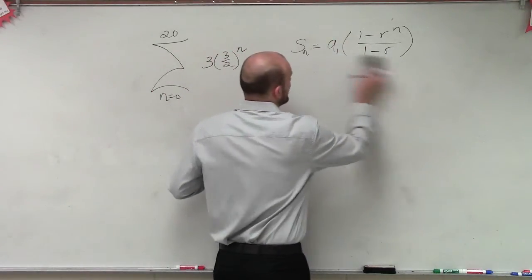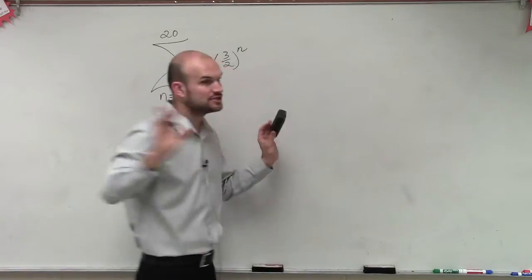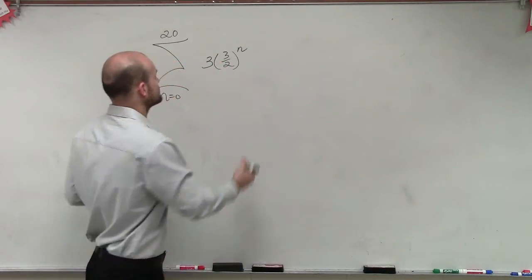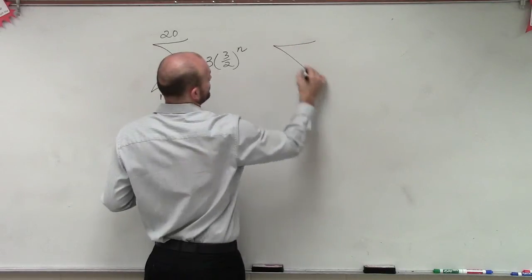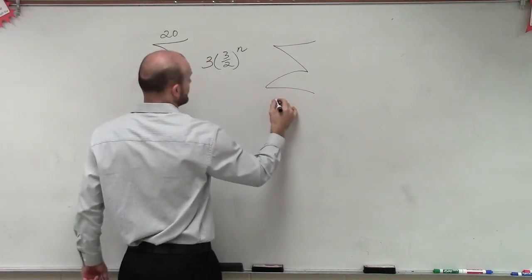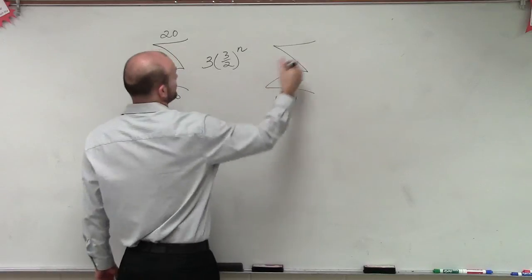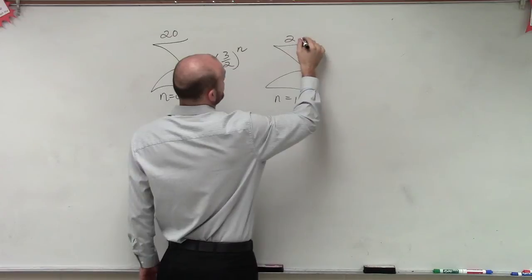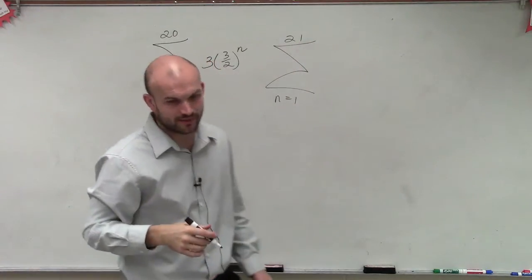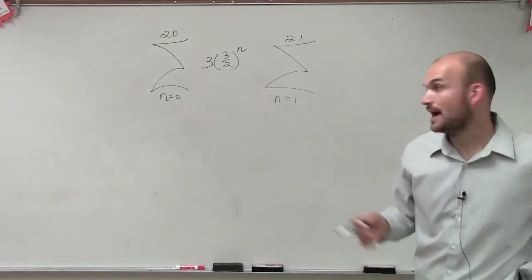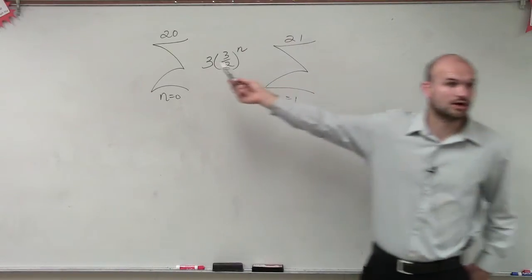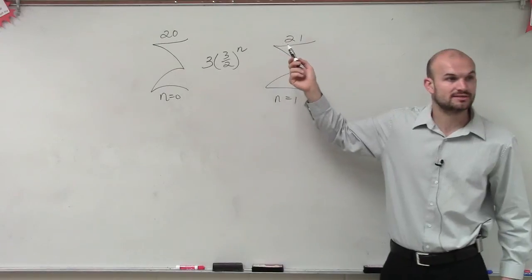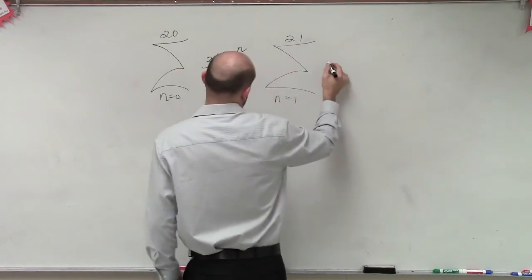So how can we rewrite this problem without changing any values, without changing the problem? But how can we rewrite it so that we can start? Well, obviously, we know now that I need to do n equals 1. And then here's still going to be 21 to move up to. So now we still have to confirm our 20 terms, right? But if we start at 1, now we've got to go up to 21, correct? All right? And our rule has to be the same.